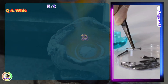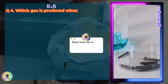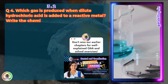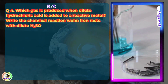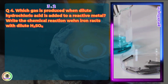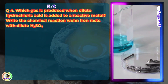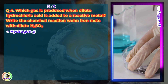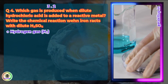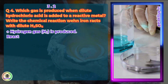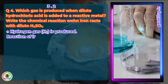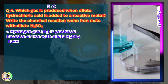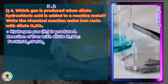Question 4. Which gas is produced when dilute hydrochloric acid is added to a reactive metal? Question 5. Write the chemical reaction when iron reacts with dilute H₂SO₄. Answer: Hydrogen gas is produced. Reaction of iron with dilute H₂SO₄: Fe + H₂SO₄ → FeSO₄ + H₂.